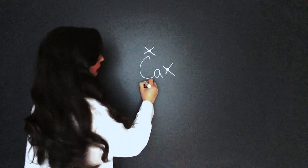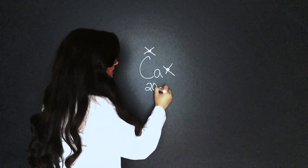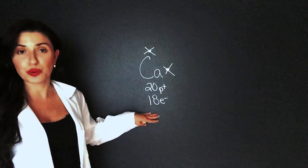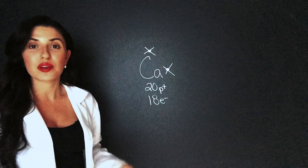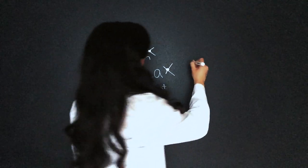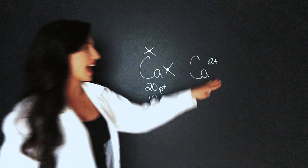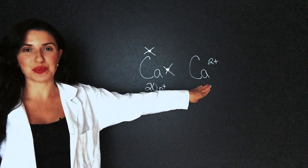So now calcium has 20 protons but only 18 electrons. It's lost two of the negative charge. So now calcium will be written like this. And we have a cation, calcium two plus.